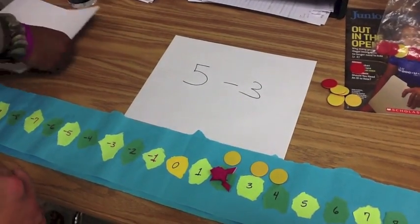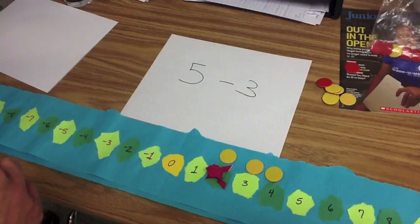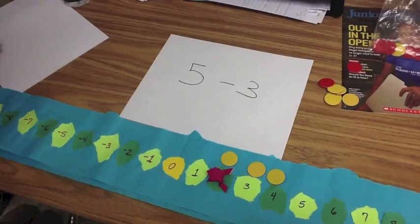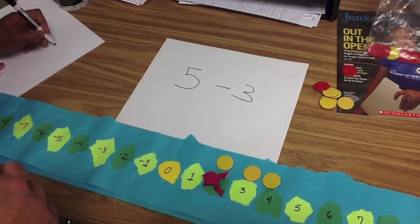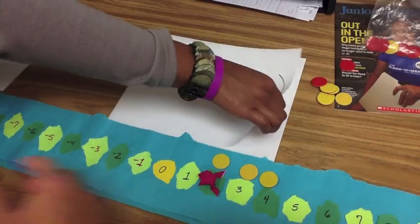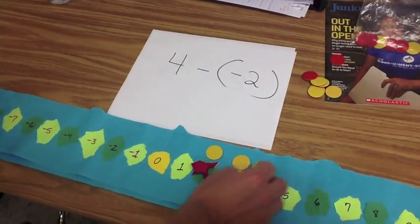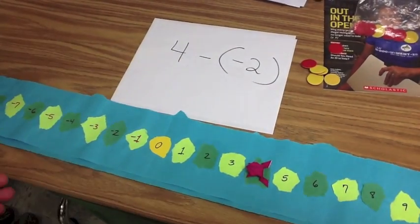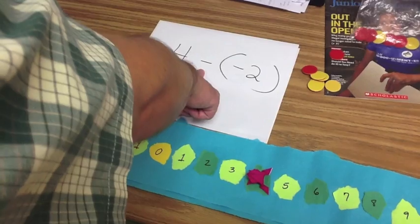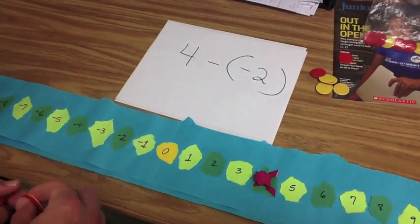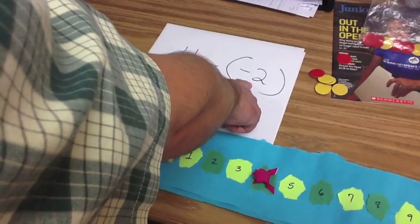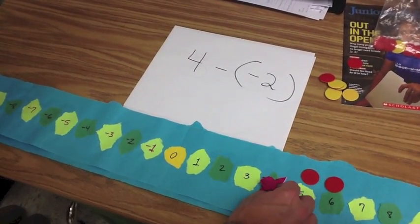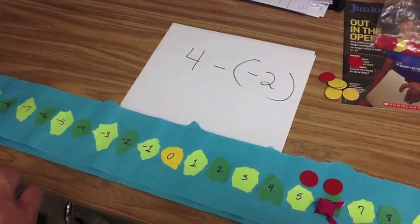Let's go ahead and go with an equation or an expression that has a positive subtracting a negative. All right. So we have four minus negative two. Now, again, first number tells us where the math frog starts. Second number says it's still depressed. I'm sorry, the function says it's still depressed. Second number tells us which direction it's jumping. And this time it's jumping backward. So it's going to move one, two spaces backward, which gives us six. Six. Very good.